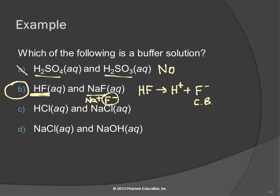How about HCl and NaCl? HCl is a strong acid, and chloride is technically the conjugate base — so it looks like it has an acid and a conjugate base. But HCl is not a weak acid. When you put hydrochloric acid in solution, all you get is chloride and hydrogen ions — there are no intact molecules of the acid. So it won't work as a buffer. That's not a buffer.